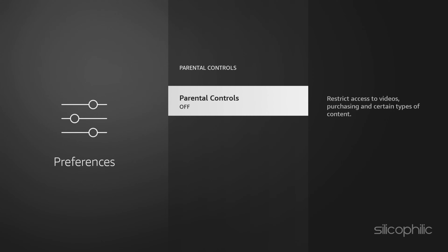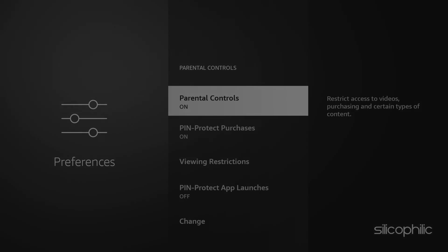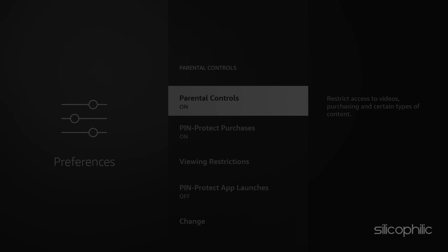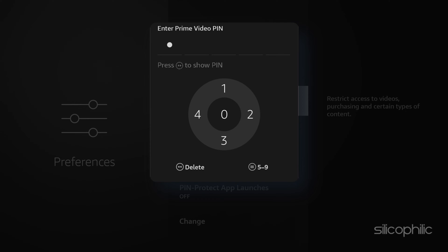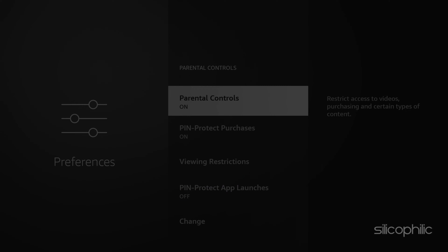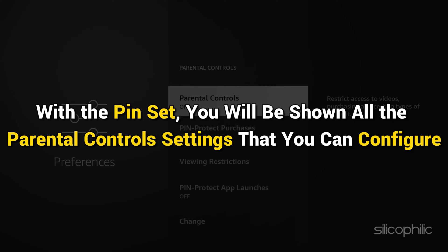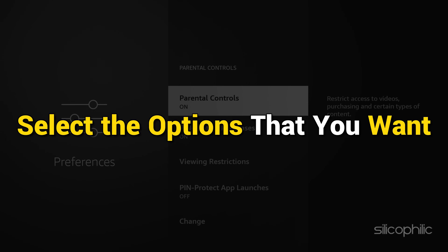To activate Parental Controls, enter your PIN. Press the menu button to switch between sets of digits 0 to 4 and 5 to 9 on the PIN entry wheel. With the PIN set, you will be shown all the Parental Controls settings that you can configure.